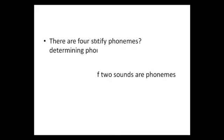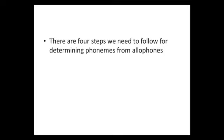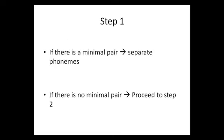Given a set of data in a particular language, we will follow these four steps to determine if two phonetically similar sounds are different phonemes or allophones of the same phoneme. Notice that allophones are usually phonetically similar. There are four steps we need to follow for determining phonemes from allophones.